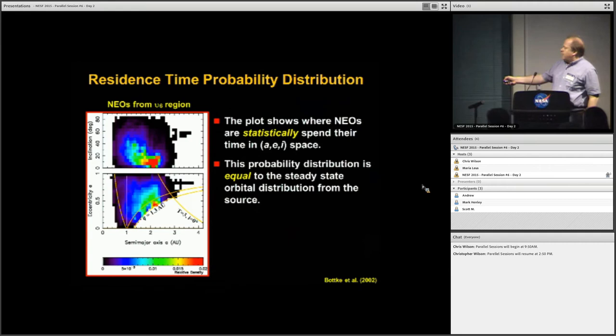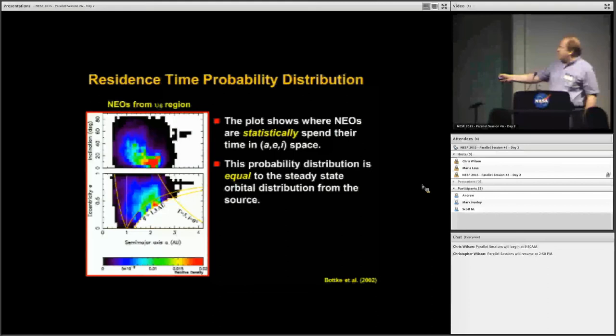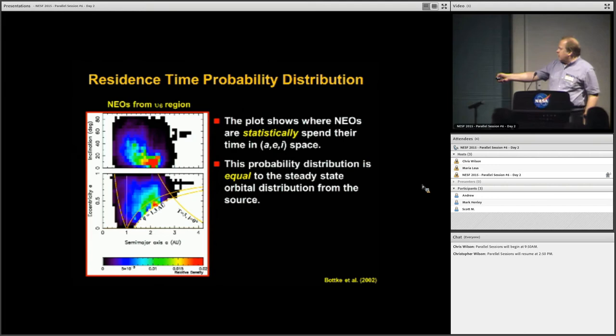What you can do with animations like that is keep track of where they spend time in different regions of semi-major axis space, eccentricity space, or inclination space. You can keep track of these little bins. If you keep track of all the time they spend there, you get a probability distribution. This actually tells us statistically where these objects are most likely to be located. This gives you the steady state of what that is.